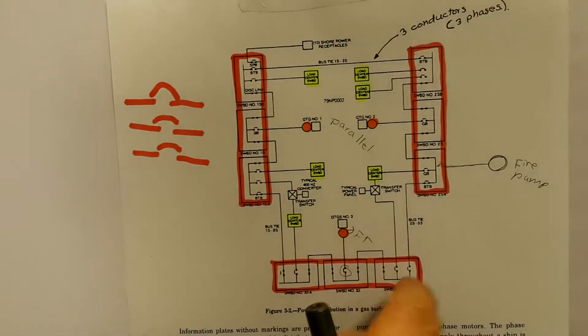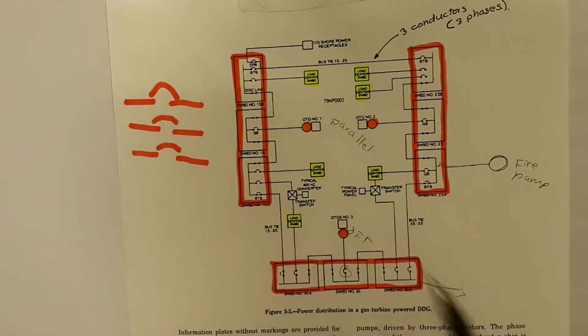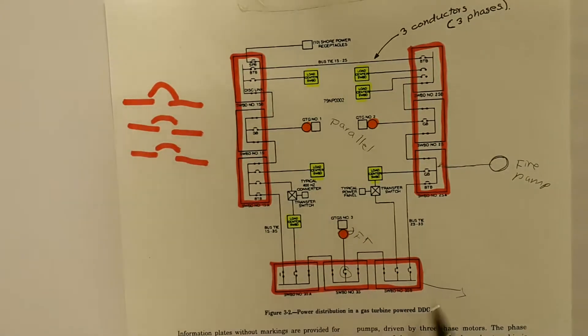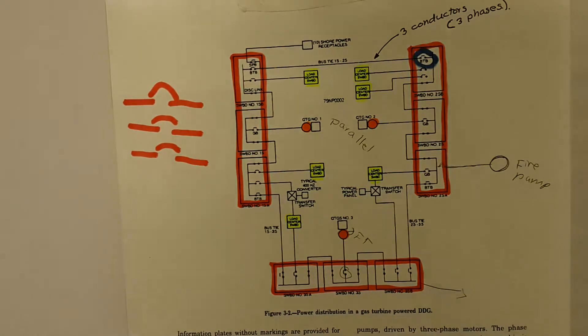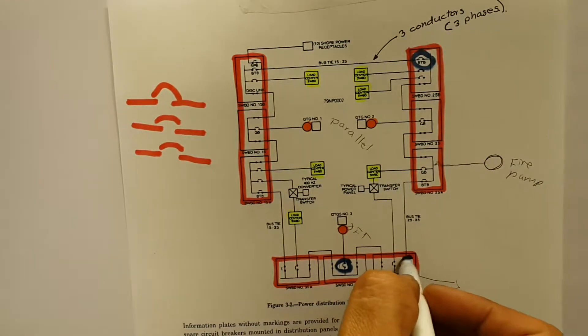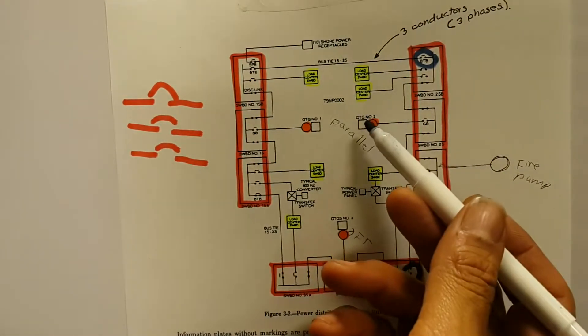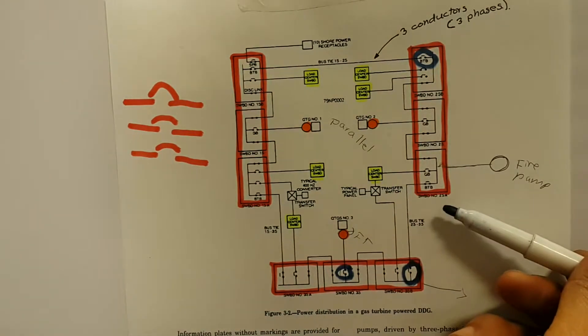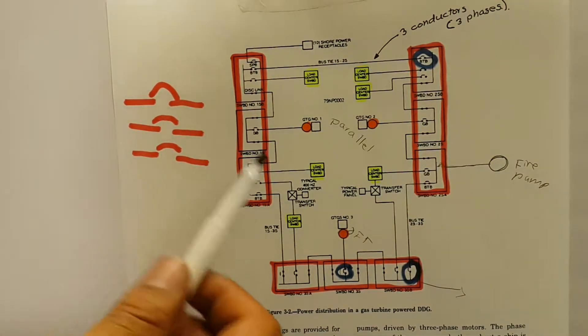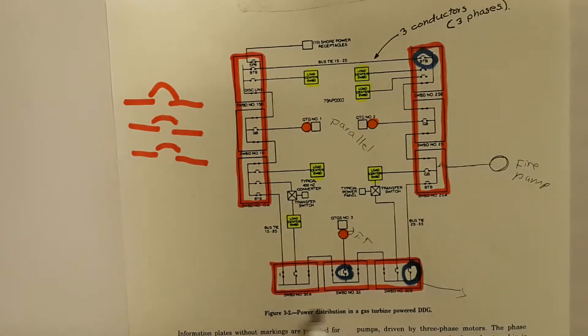So electrons going through some load connected to this one, some will be coming from number two generator, and some could be coming from number one generator. In that scenario, we could also split the bus. Remember this one is open, and we could open this generator breaker, this bus tie breaker over here. So now, number two generator will only be feeding number two switchboard loads, and number one generator will be feeding one switchboard and number three switchboard.